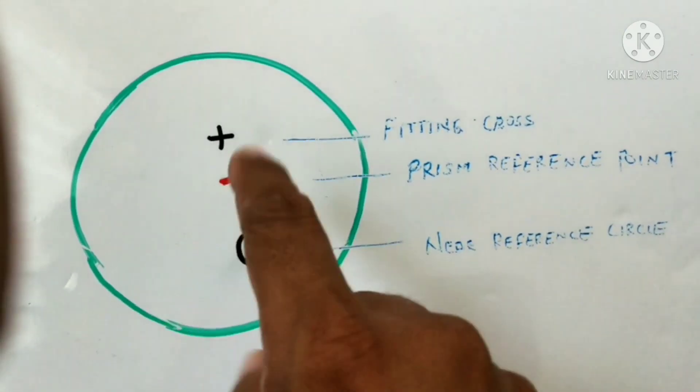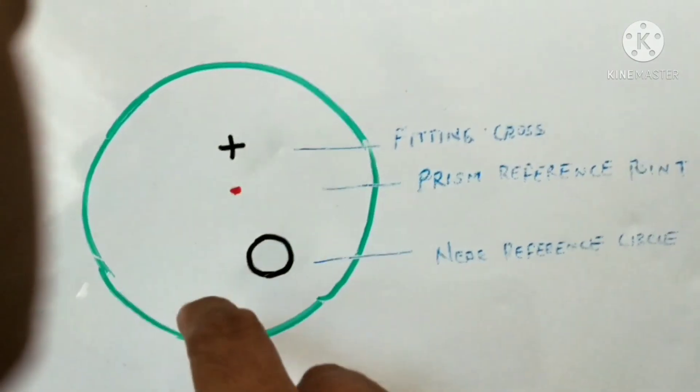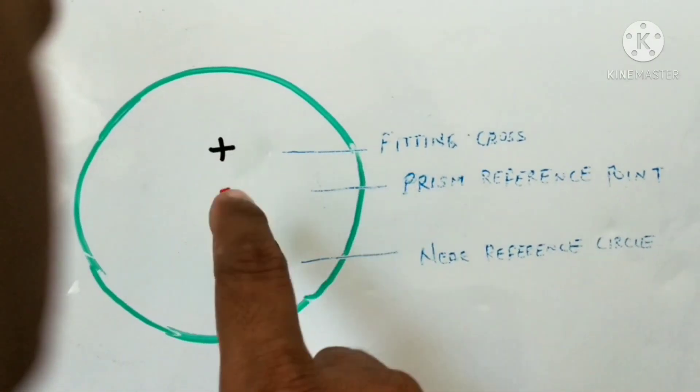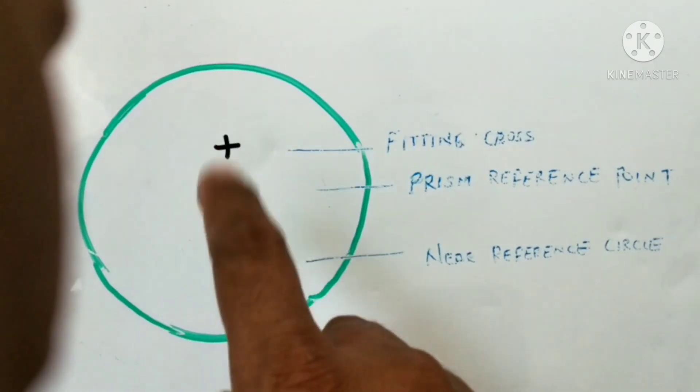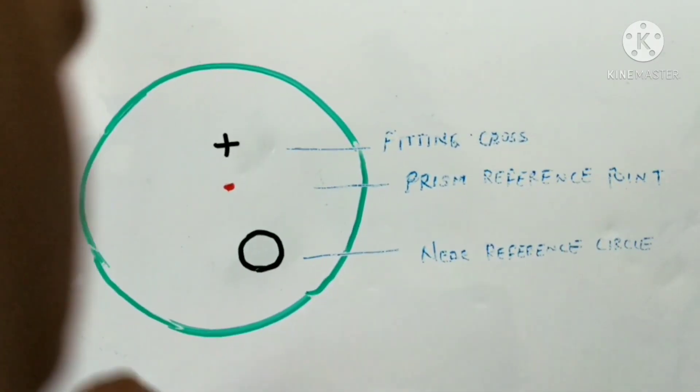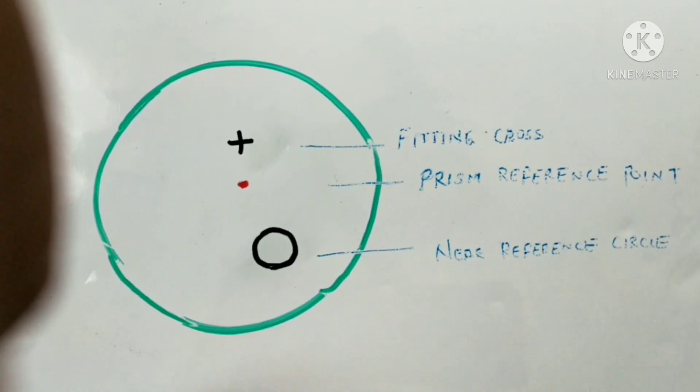The purpose of prism reference point is not to determine the distance between the engraving and the fitting cross. The prism reference point actually indicates what prism is being grounded on a progressive lens.